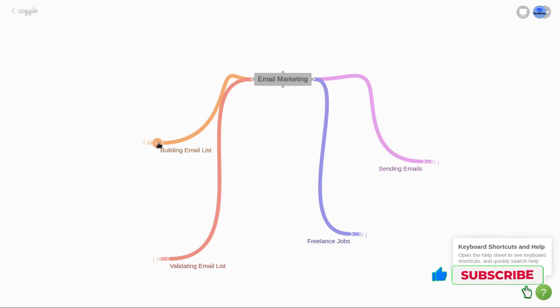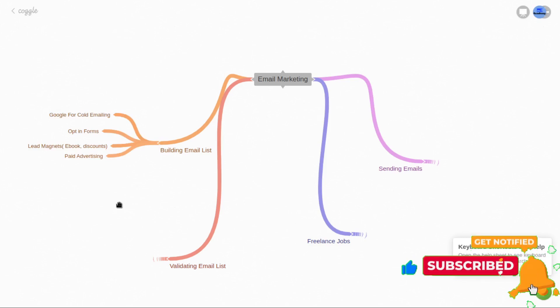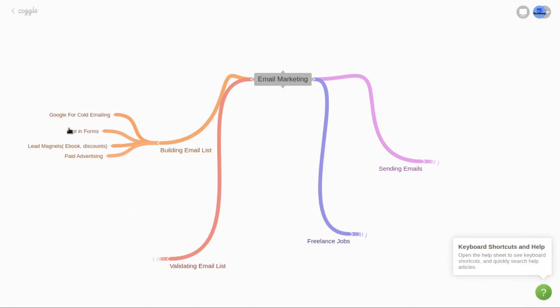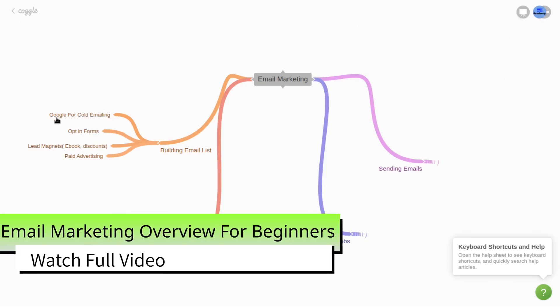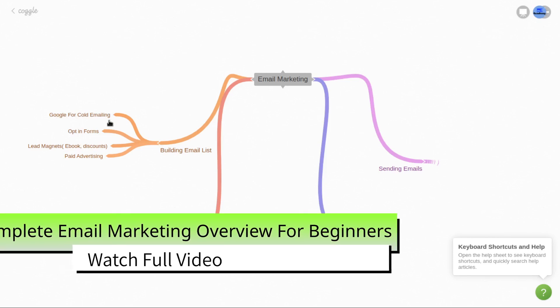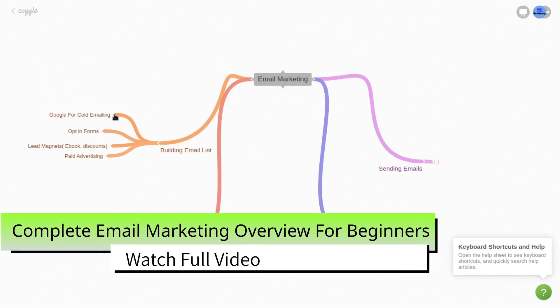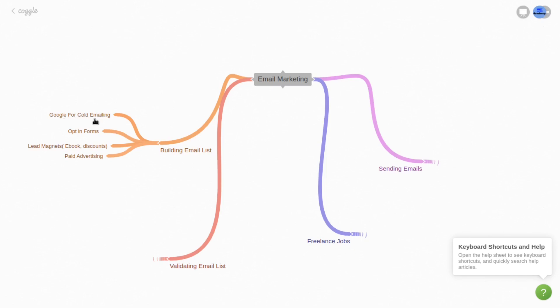First, we'll start with building an email list. There are some techniques and methods to build your email list. The first one is cold emailing — you can use Google and other email extractors to build your email list. I have made a lot of videos about building your email list with Google and other email extractors for cold emailing. If you have a website, an e-commerce site, or a blog and want to promote your products, you need to build your email list properly.